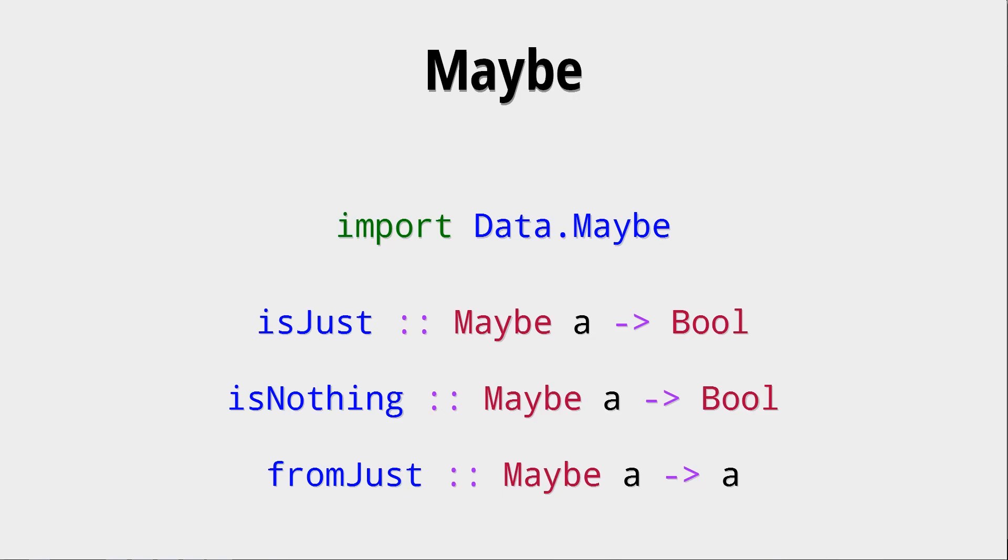This is important if you want to do filtering or mapping, for example, on a list of Maybes. And sometimes we already know that a Maybe is not Nothing, because we can check if our Maybe does not equal Nothing, then do something.